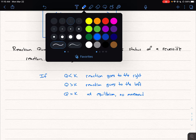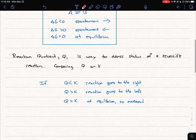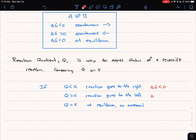Now, think about what we just said here. In this first point, if Q is less than K, the reaction goes to the right. Well, that's delta G is less than zero. If Q is greater than K, and the reaction goes to the left, that's delta G being greater than zero.